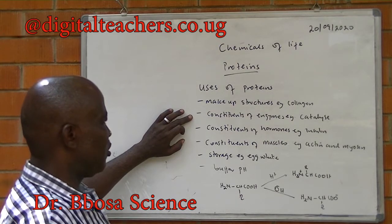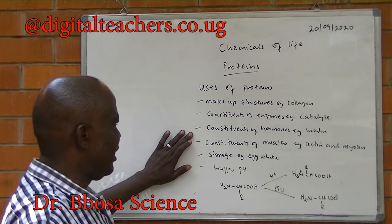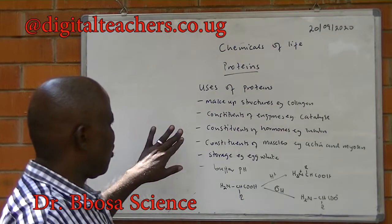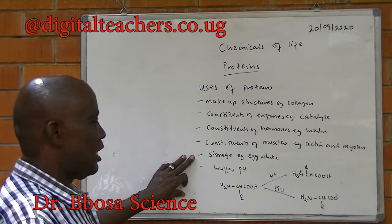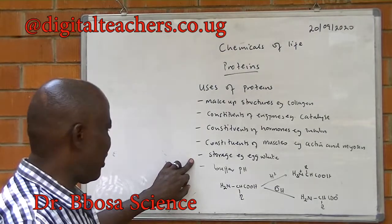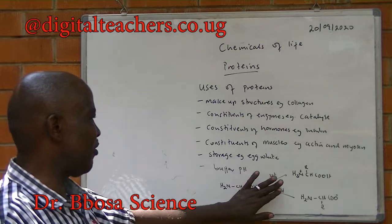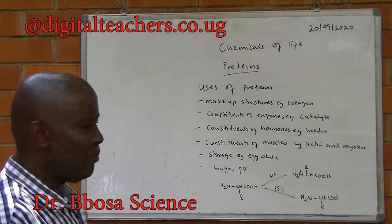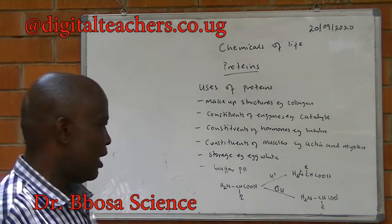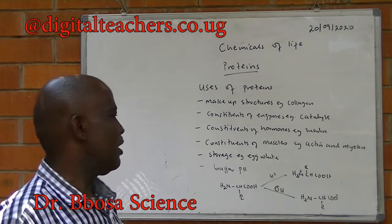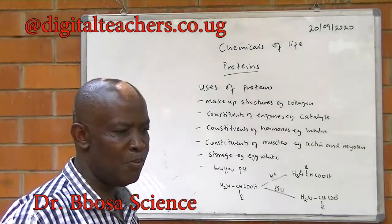Uses of proteins: they make up structures such as collagen. They are constituents of enzymes, for example catalase. They are constituents of hormones, for example insulin. They are constituents of muscles, for example actin and myosin. They are used for storage, for example egg white. They buffer pH — amino acids will react with acid to form a protonated ammonium amino acid, or react with bases to form a carboxylate ion, in which case they can remove hydrogen ions or hydroxide ions from solution.